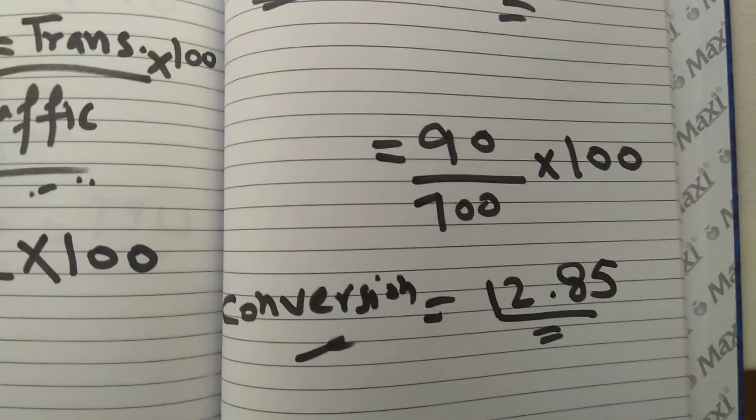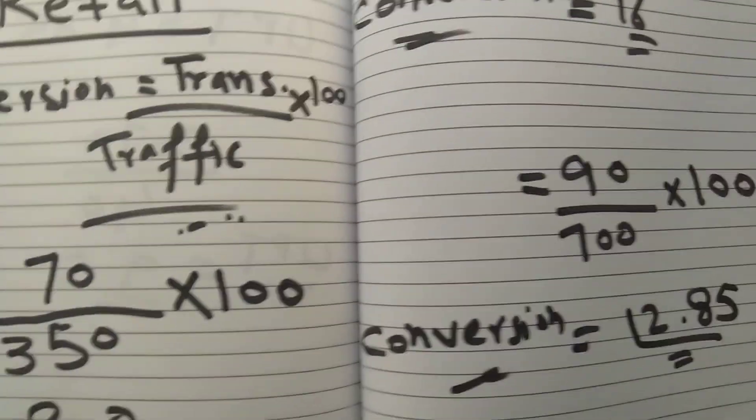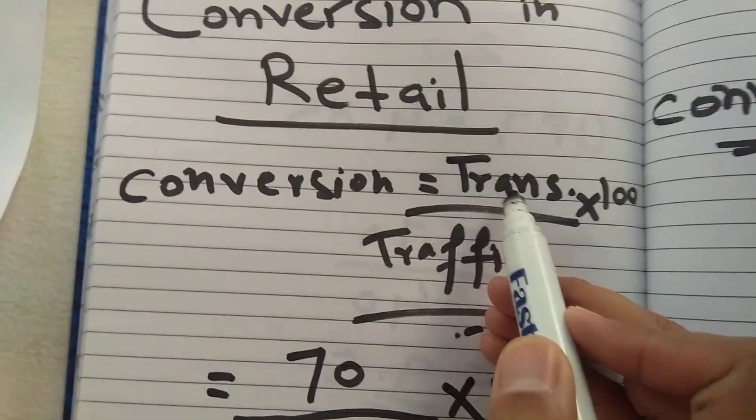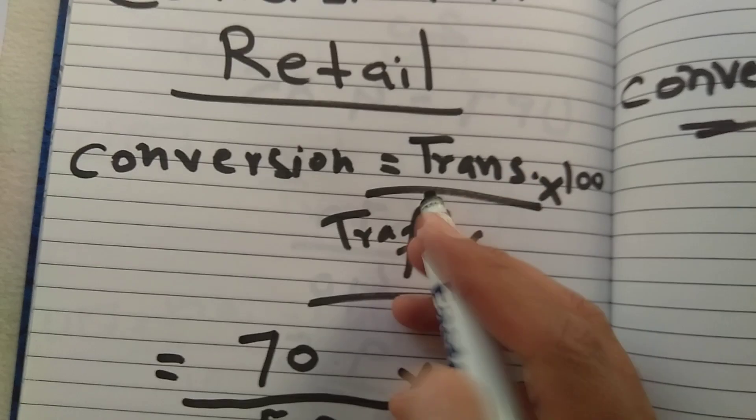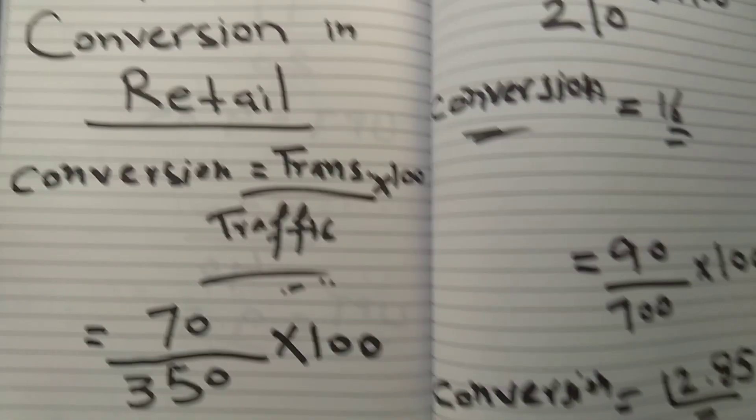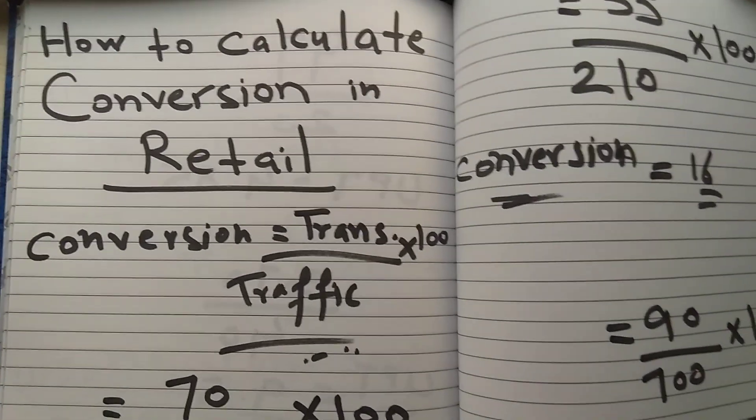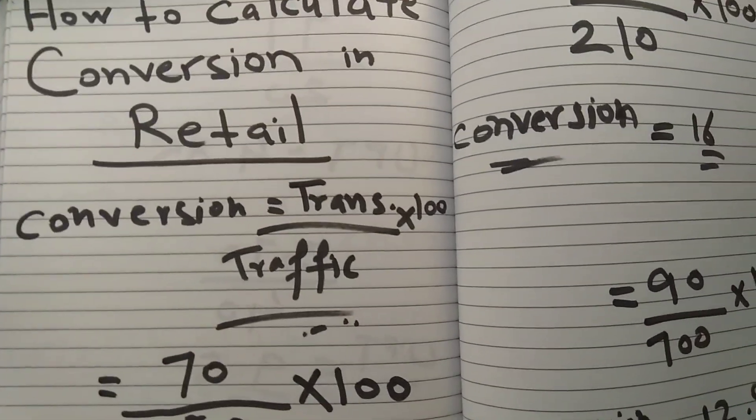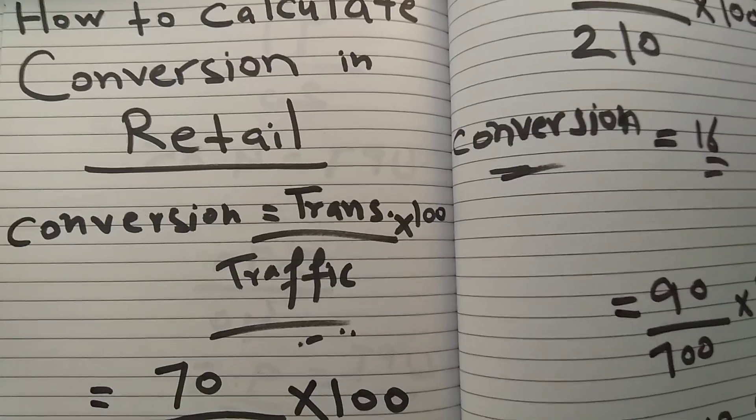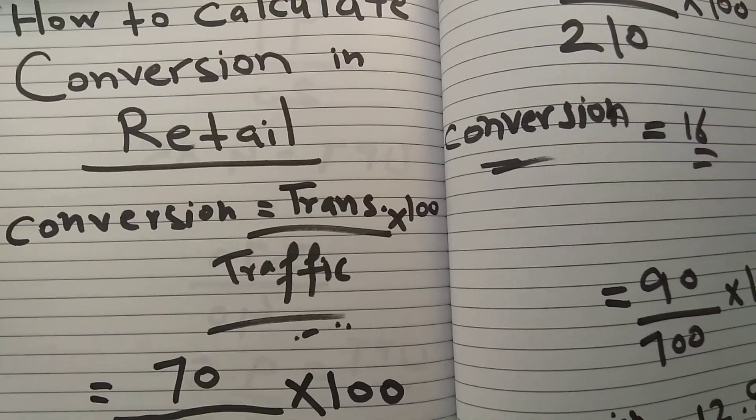I hope you understand the basic formula for conversion. Basically it is very simple: you have to do transactions divided by traffic, multiply with 100. I hope you understand this formula and you can try it - it's very useful. If you like my video, please subscribe to my channel. Thank you very much.